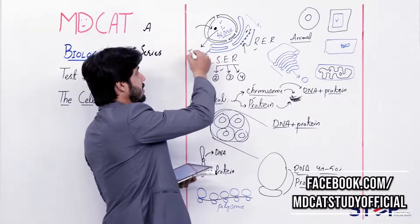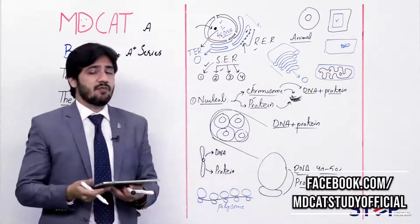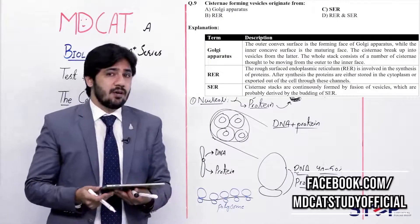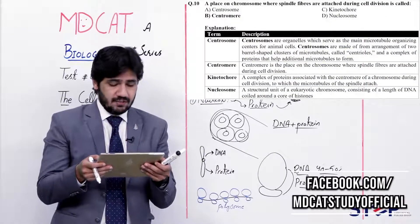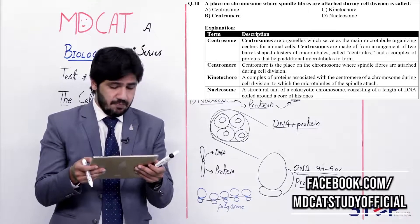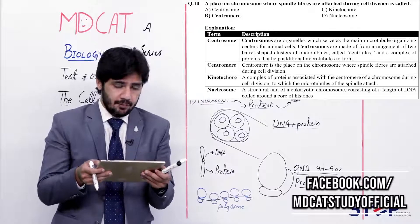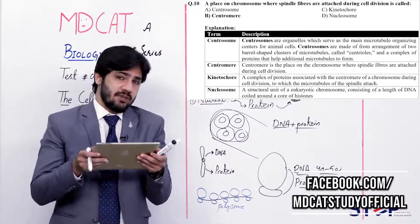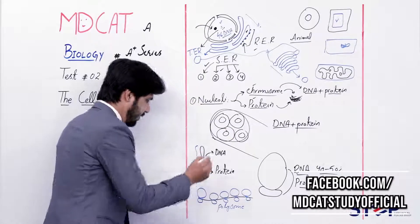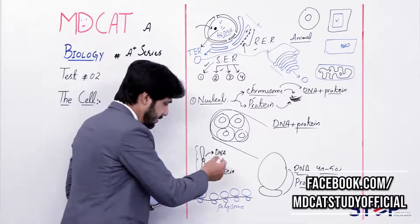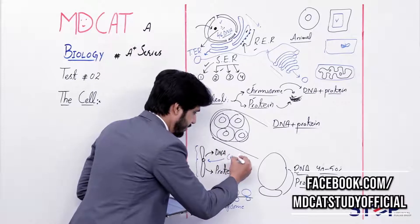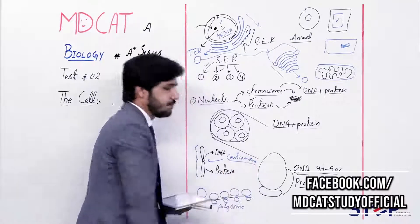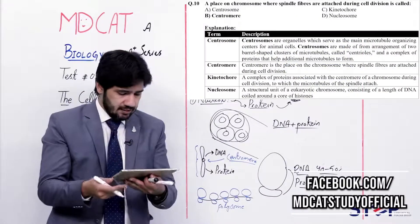The vesicle known as TER (transporting vesicle of endoplasmic reticulum) moves from the endoplasmic reticulum and is used to create cisternae of the Golgi apparatus. So the right answer is charlie — SER. Question 10: The place on a chromosome where spindle fibers are attached during cell division is called (alpha) centrosome, (beta) centromere, (charlie) kinetochore, (delta) nucleosomes. During mitosis, the central part of the chromosome where spindle fibers attach is called the centromere.